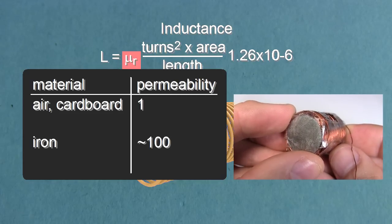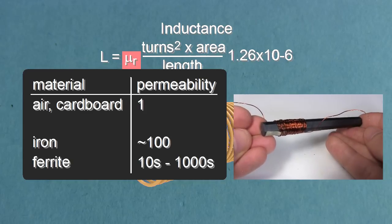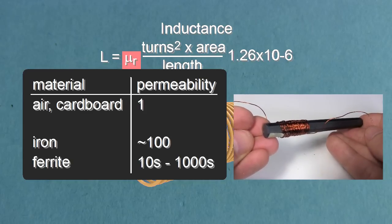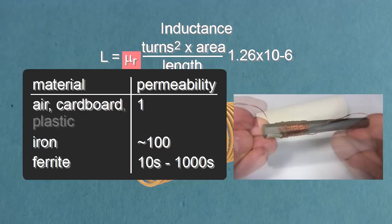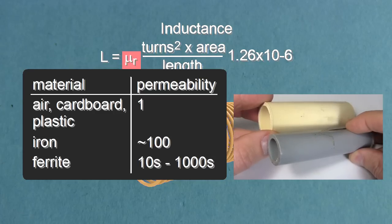The permeability of ferrite is equally difficult to find, since there are many different types, and their values range from the tens to the thousands. Note that plastic cores, like PVC tubes or electrical conduit, also count as air, and so use a relative permeability of 1 for those too.